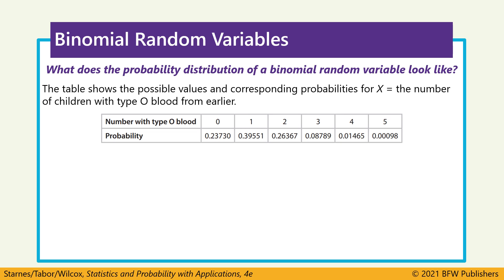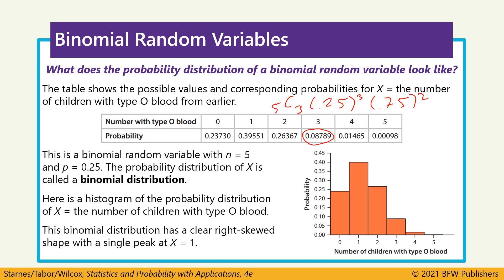We can use that equation to find probabilities for each individual outcome and build a probability distribution for all possible results of having five children and counting how many have type O blood. For example, the probability for X equals 3 comes from 5C3 times 0.25 to the third times 0.75 squared. Plotting this as a histogram, we see it has a right-skewed distribution, with probability on the vertical axis and the variable X on the horizontal axis.